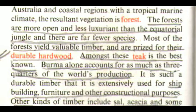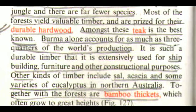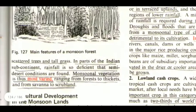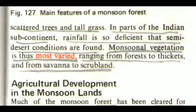Burma alone accounts for as much as three-quarters of the world's teak production. It is such a durable timber that it is extensively used for shipbuilding, furniture, and other constructional purposes. Other kinds of timber include sal, acacia, and some varieties of eucalyptus in northern Australia. Together with the forest are bamboo thickets which often grow to great heights. With a decrease in rainfall in summer, the forests thin out onto thorny scrubland or savannah, with scattered trees and tall grass. In parts of the Indian subcontinent, rainfall is so deficient that semi-desert conditions are found. Monsoonal vegetation is thus most varied, ranging from forests to thickets and from savannah to scrubland.